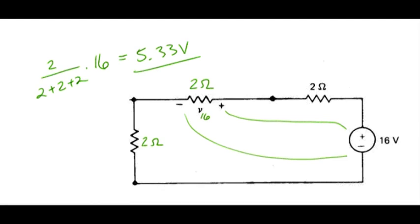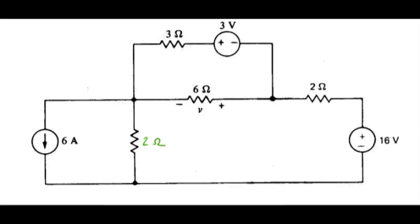Let me go back to the original circuit then for combining the results. So the desired voltage V is the sum of V6, V3, and V16. And we end up with the result of 8 volts.